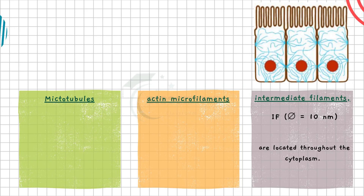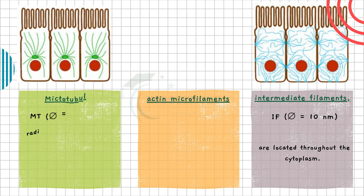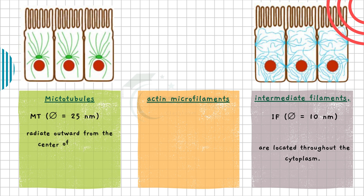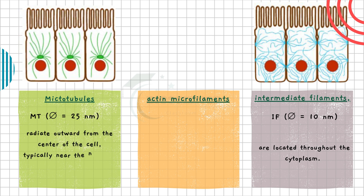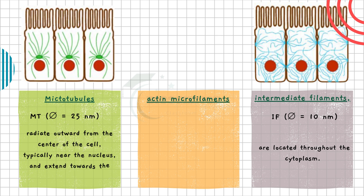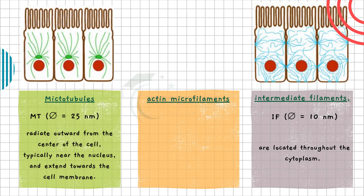Let's take the example of epithelial cells. The intermediate filaments, depicted in blue, are located throughout the cytoplasm. These filaments are more evenly distributed and surround the nucleus. Their diameter is 10 nanometers. The microtubules, represented by green lines and with a diameter of 25 nanometers, radiate outward from the center of the cell, typically near the nucleus, and extend towards the cell membrane.